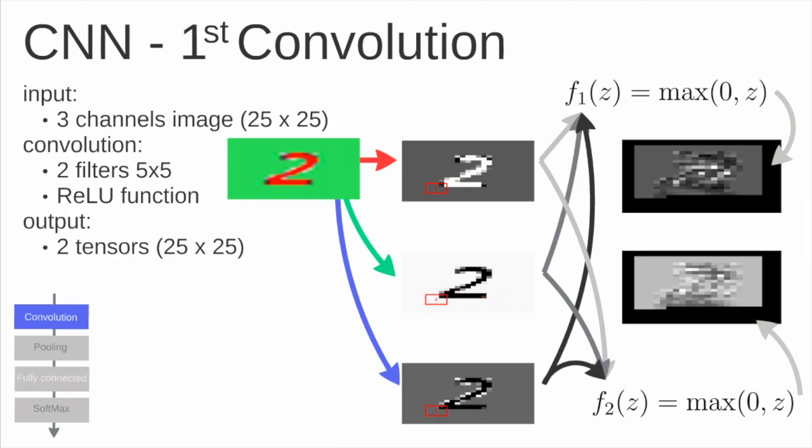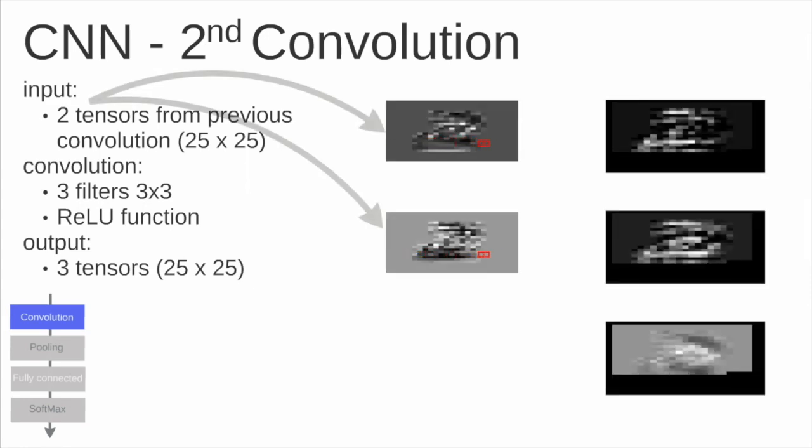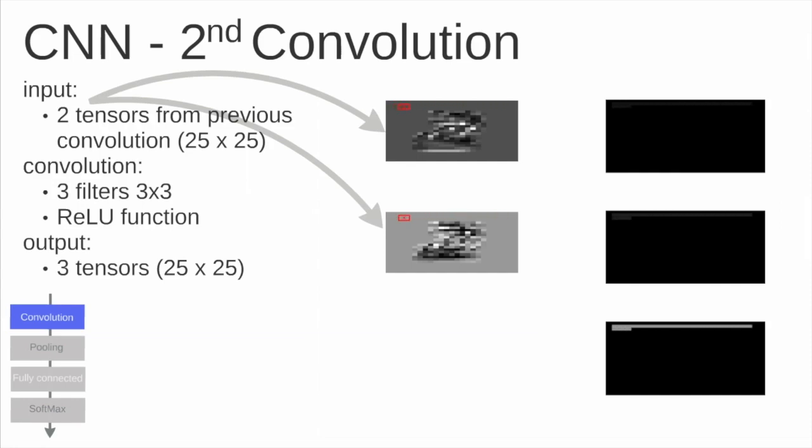These two images that are being formed here are what we call tensors. Now we have two tensors of the size 25 by 25. The next layer we will apply the same step. The input will be exactly the previous output. The two tensors from the previous convolution will be the input of this case.